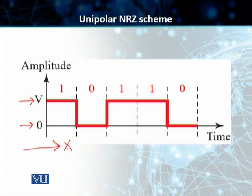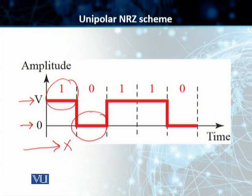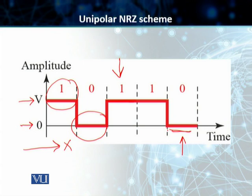Students, why is this called non-return to 0? The reason is that the positive voltage defines 1 bit and the 0 voltage defines the bit 0. Positive voltage is 1 and 0 voltage is 0. At no point in time does the signal return to 0 in the middle of the bit. For a 1, throughout the bit, the signal stays at the positive voltage. Similarly, for a 0, throughout the bit, the signal stays at voltage 0. The signal does not return to 0 in the middle of the bit, and therefore this is called non-return to 0.